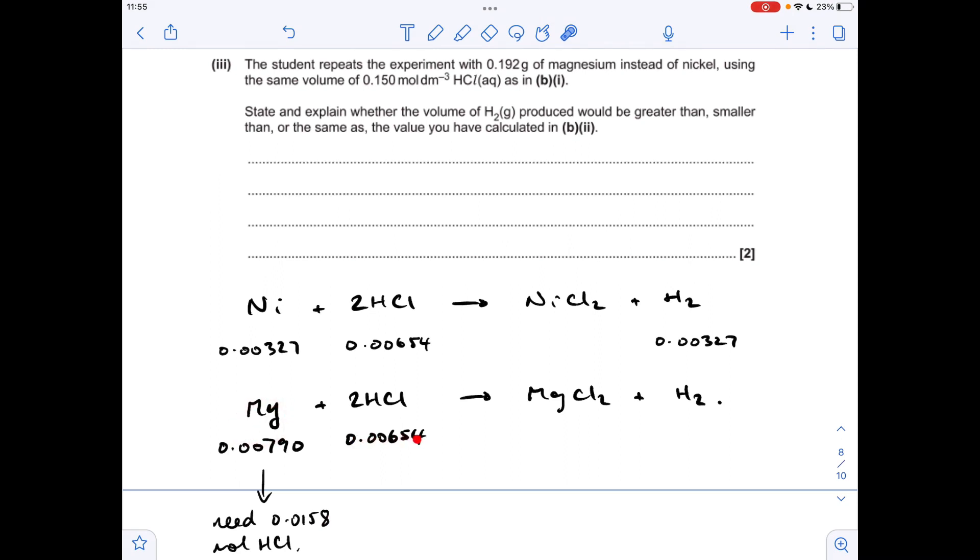Well we've still got the same moles as before. So the magnesium is now in excess, because it's not all going to react. So the HCl is the limiting reagent.